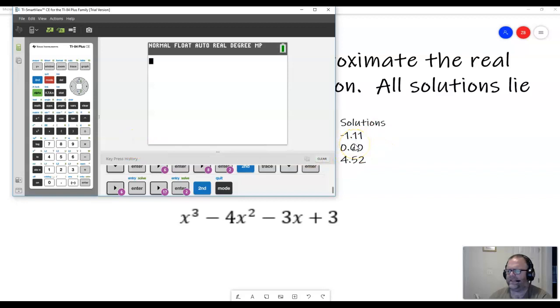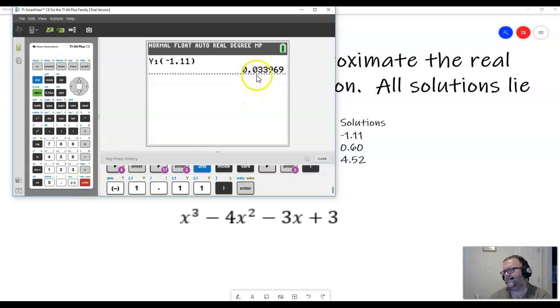And to do that, I'm just going to do one of them. I'll do the negative 1.11. What we can do is hit vars, go over to y variables, hit enter. We're going to pull up, this means that we're pulling up this function here, because that's the one that we put in y1. And then I'm going to open parentheses and ask it to evaluate that at negative 1.11. And we should get a y value that's pretty close to zero. And you can see we do. That is pretty close to zero.